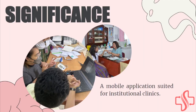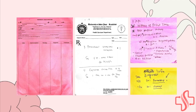This is the significance of the SAMS application. And as you can see here, this is the standard way of record keeping. On the far left is the individual health record form used to record patients, and at the very middle is the prescription form. Now, what if it will be converted to a digital form?